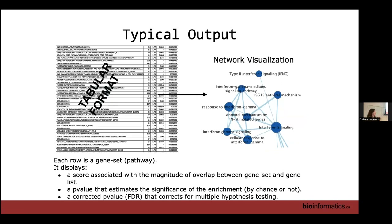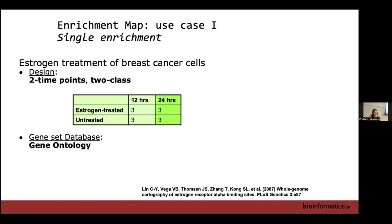As a typical output, you go from the GSEA or gProfiler tables — GSEA generates a lot of tables but there are two important ones representing upregulated and downregulated results — and you give these to Enrichment Map along with a few other files. You translate those tables into a network, and this is the typical output from Enrichment Map.